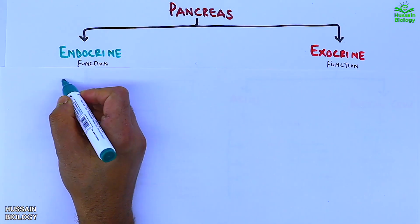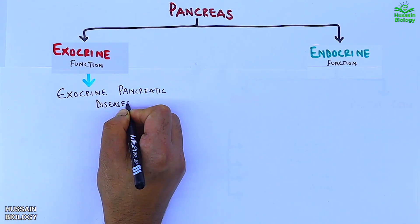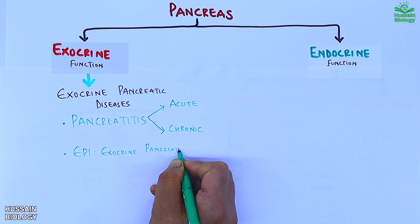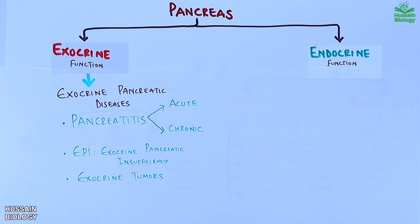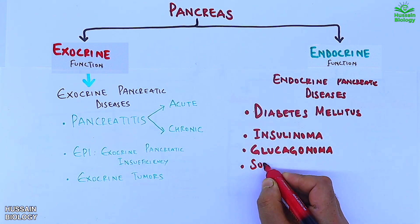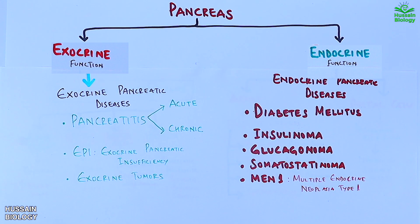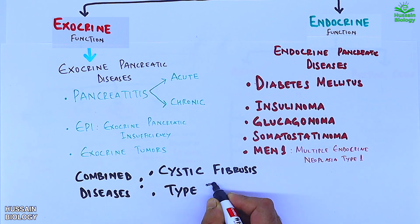Now let's get to the diseases related to exocrine and endocrine functions. Exocrine pancreatic diseases include pancreatitis — both acute and chronic — exocrine pancreatic insufficiency (EPI), and exocrine tumors. In the case of endocrine-related diseases, we have diabetes mellitus, insulinoma, glucagonoma, somatostatinoma, and multiple endocrine neoplasia type 1. Additionally, there are combined diseases like cystic fibrosis and type 3c diabetes.